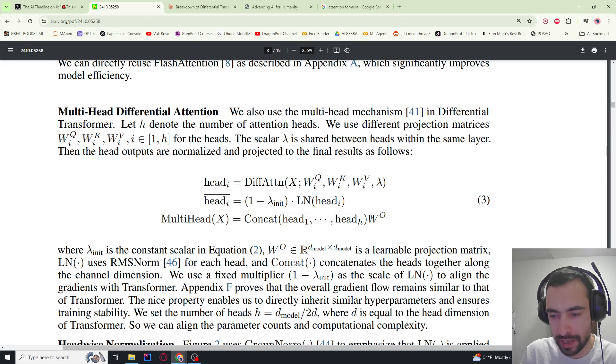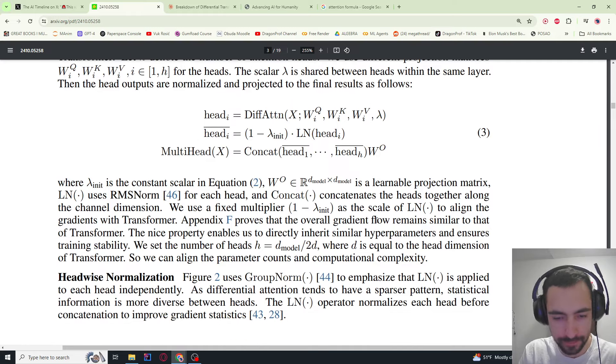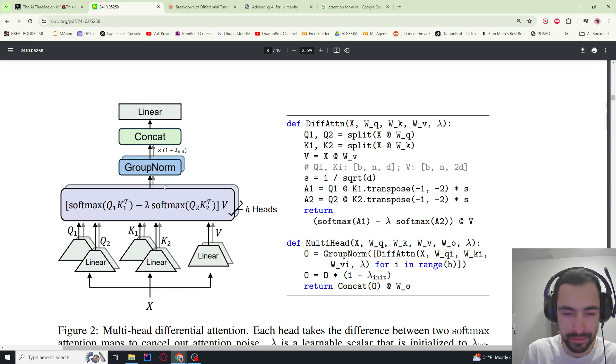I'm not exactly sure what the function of this learnable parameter is, maybe to change the dimensions, maybe to learn something, or to maybe convert this concatenation into some fixed matrix size. Maybe we can figure that out as we go. If we take a look at this graph that explains the same thing, we have some input, then we split it into two Q matrices, two key matrices, one value matrix. We have a bunch of heads here, each head has this formula that I described earlier, group normalization, which is RMS norm in this case, we multiply with this constant, concatenate, pass through the linear layer.